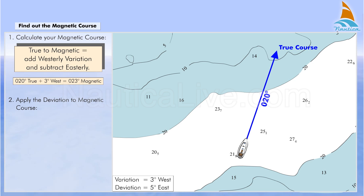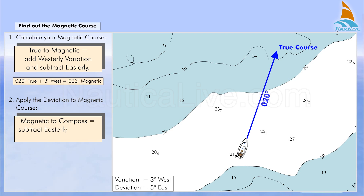Now apply the deviation to your magnetic course using the formula: magnetic to compass, subtract easterly deviation and add westerly deviation. In our case, 023 degrees magnetic minus 5 degrees east deviation equals 018 degrees compass.